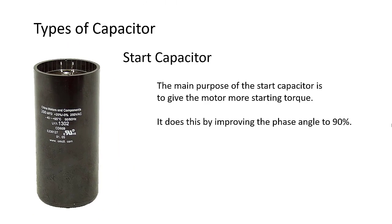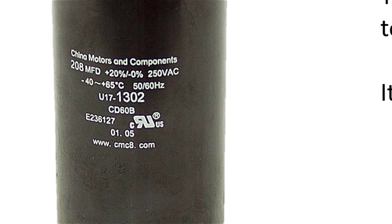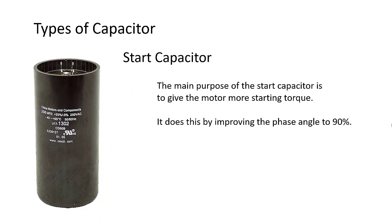Start capacitors are usually physically bigger than run capacitors. They also tend to be larger in capacitance values. Their capacitance rating comes in a range instead of a set number like in run capacitors. This is because the phase shift produced by an AC current through a start capacitor doesn't need to be as precise to get the motor turning.